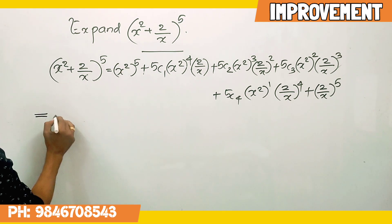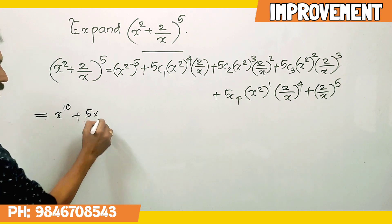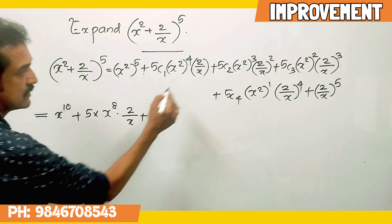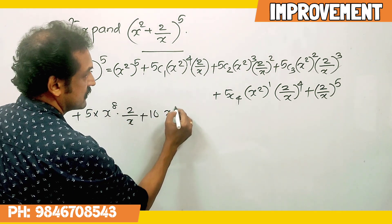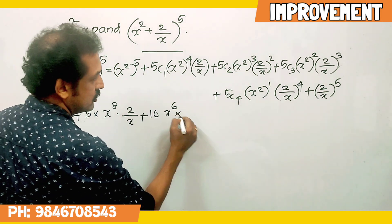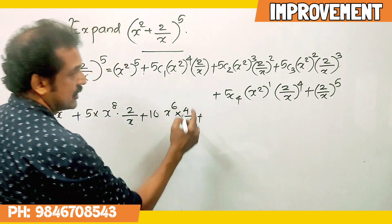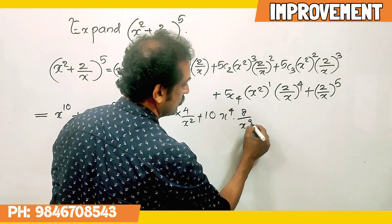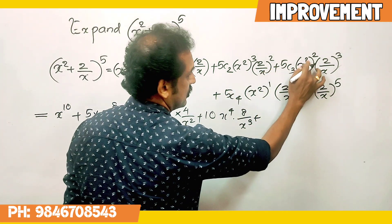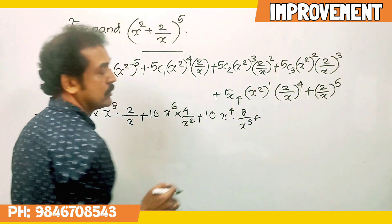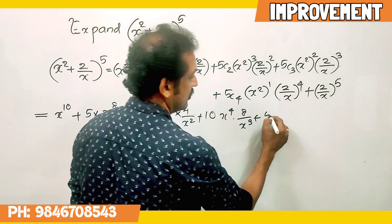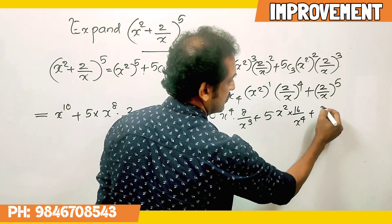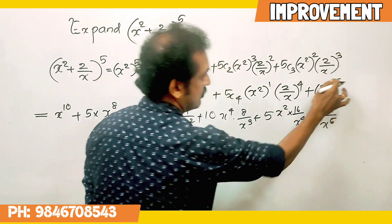Now simplifying: x squared raise to 5 equals x raise to 10. Then 5C1 is 5, x squared raise to 4 becomes x raise to 8, into 2 by x. 5C2 is 10, x squared whole cube is x raise to 6, into 2 by x whole square which is 4 by x squared. Plus 5C3 is 10, x raise to 4, into 8 by x cube.